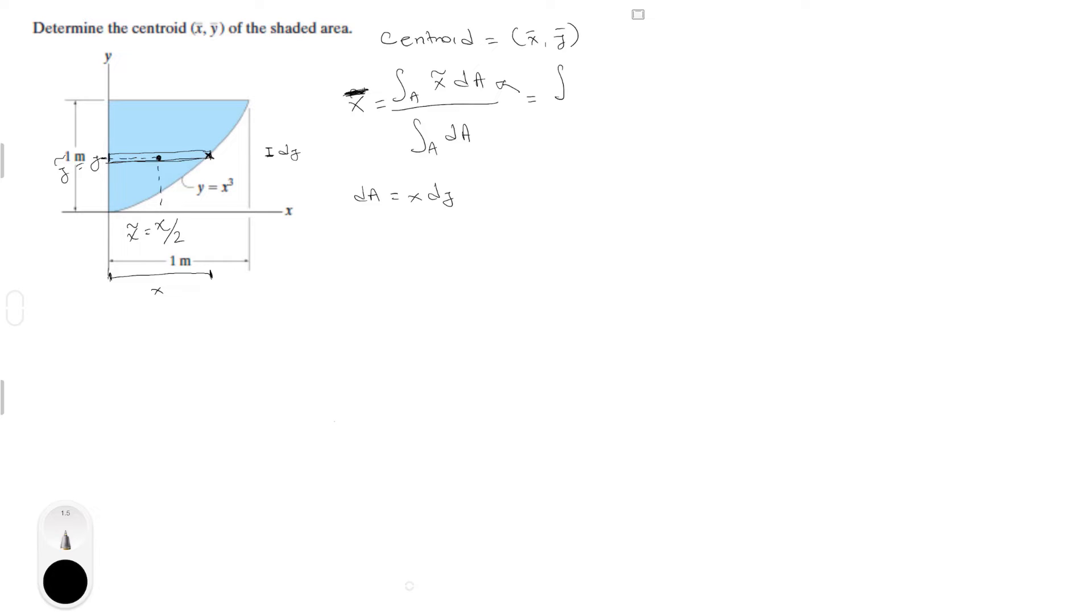This is the integral from 0 to 1 because this is from 0 to 1 and we're doing the curve going that way, of x over 2 because that is what x curly is, and now dA which we know is x dy, all over the integral again from 0 to 1 and we just replace dA again by x dy.